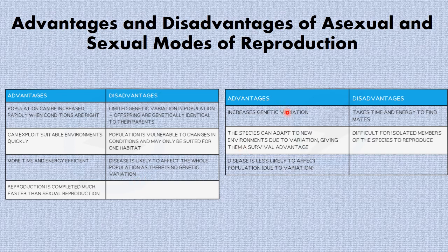Moving on to the advantages and disadvantages of sexual reproduction — the advantages are: there is increased genetic variation in offspring, and the species can adapt to new environments due to this variation, giving them a survival advantage; diseases are less likely to affect the population due to variation. The disadvantages are: it takes more time and energy to find a mate, and it is also difficult for isolated members of a species to reproduce.